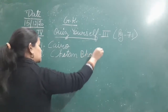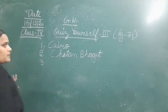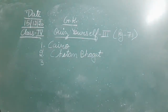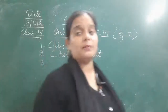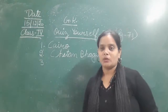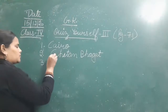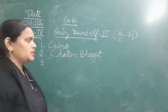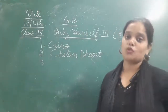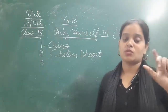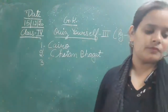Chetan Bhagat is the author of the books Five Point Someone and Two States. He is one of the famous authors from India and has written so many novels on different topics. You must have watched the movie Three Idiots — that movie is also based on one of the novels of Chetan Bhagat.